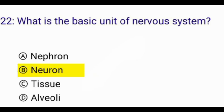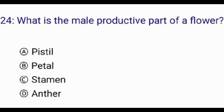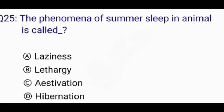What is the basic unit of the nervous system? The correct answer is option B: neuron. Myopia is a disease related to which organ? The correct answer is option A: eye.